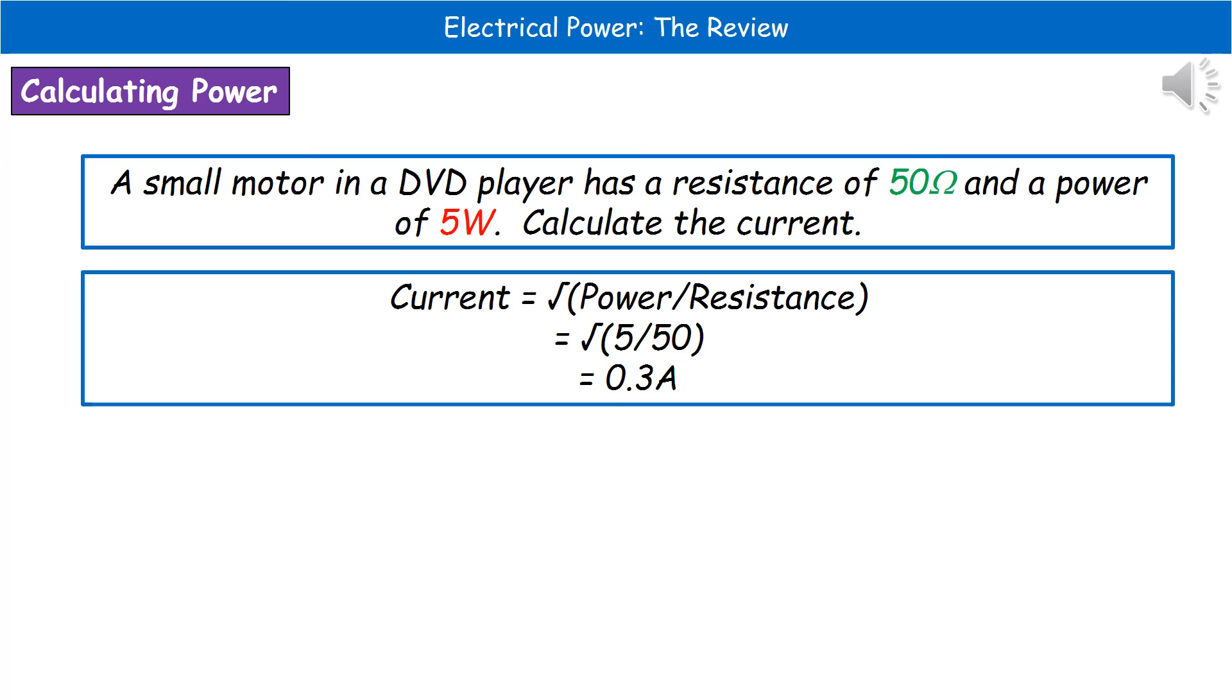Substituting the values from the question, 5 divided by 50, and then take the square root of that gives us 0.3 amps as our current.